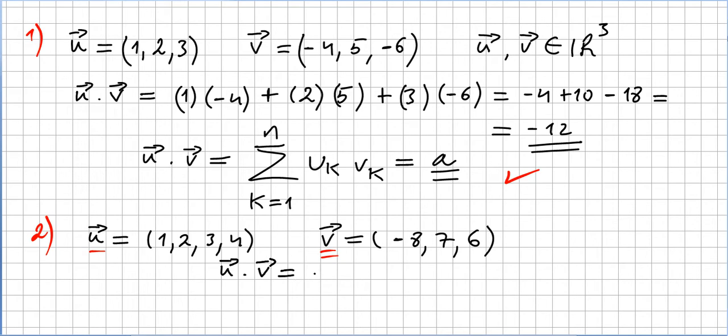So the dot product here is not defined because this vector is in R4 and this vector is in R3, and you cannot do a dot product between two different dimension vector spaces.